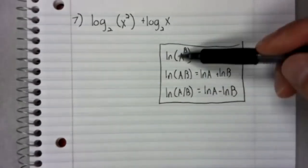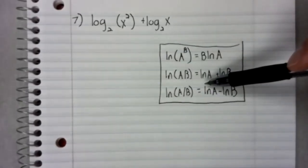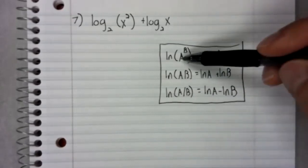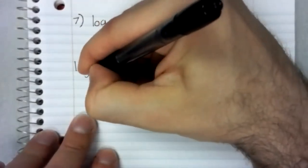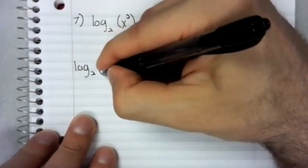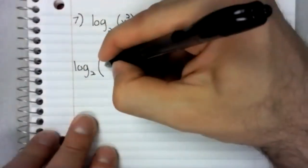these rules work no matter what the base is. I wrote them with the natural logarithms. The sum of logarithms, but they work for the log base two as well.